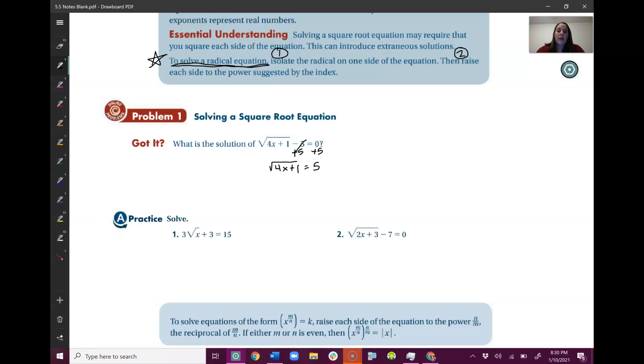Now that the root is all by itself, I'm going to raise it to whatever power I need to to get rid of this root. So this is a square root, so I'm going to square it to get rid of it. But what I do to one side, I have to do to the other side. So I get 4x plus 1 equals 5 squared, which is 25.